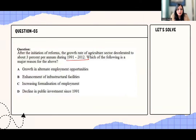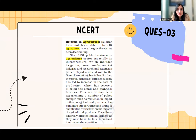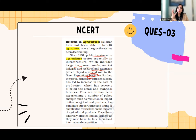Why did agricultural growth decelerate? The basic reason was the decline in public investment since 1991. Public investment in the agriculture sector — especially in irrigation, power, roads, markets, and research and extension — which had played a crucial role in the Green Revolution, fell significantly. During the Green Revolution era, this investment was strong and growth rates were high. But after 1991, the government reduced investment in this sector, which caused the growth rate to fall.